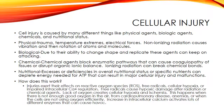Cell death can occur through apoptosis or necrosis. Apoptosis involves controlled cell destruction and is the means by which the body removes and replaces cells produced in excess, those that didn't develop correctly, those with genetic damage, or those that are simply worn out. Necrosis refers to cell death characterized by cell swelling, rupture of the membrane, and inflammation.